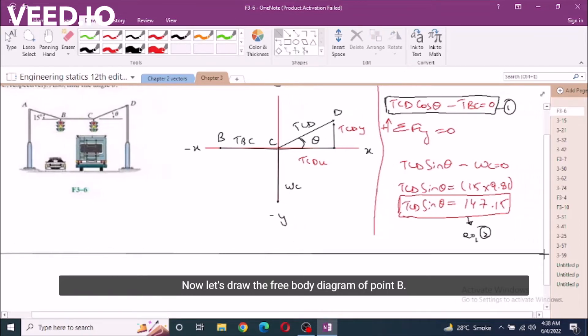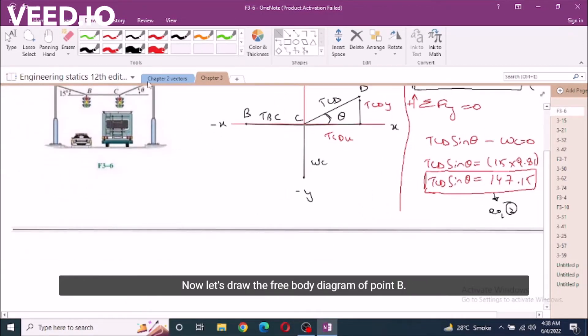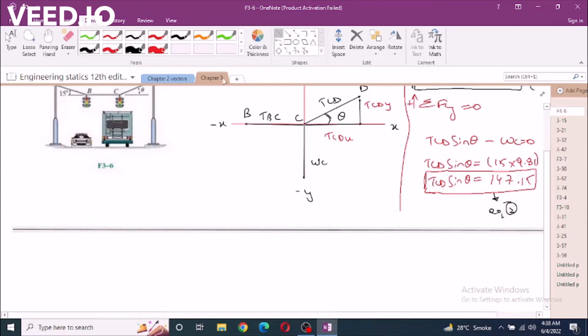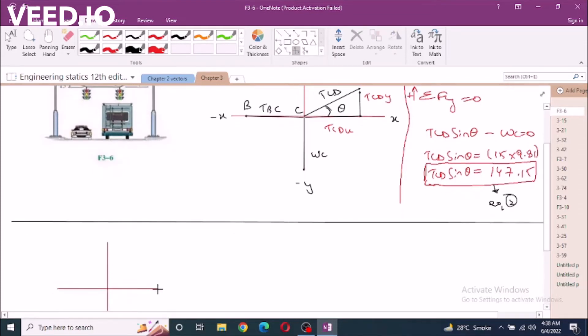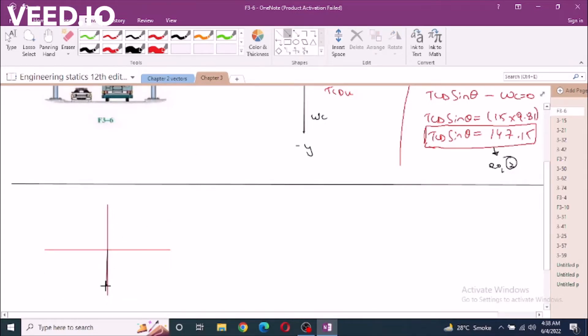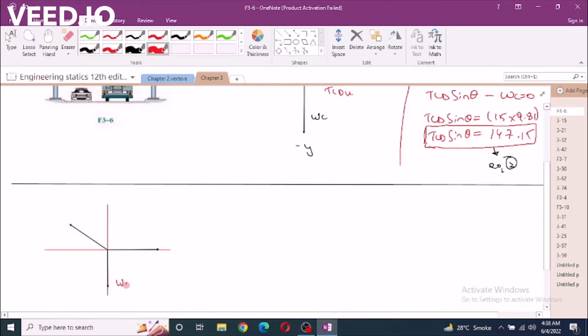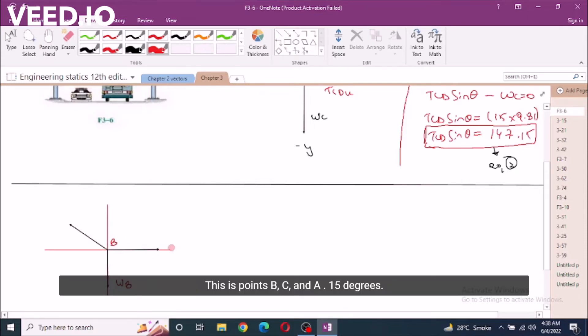I have free body diagram of point B. I have one force directed downwards, the weight of the traffic light at point B. One force going in this direction, another force is inclined at 15 degrees. This is WB, this is point B, point C, point A, 15 degrees.